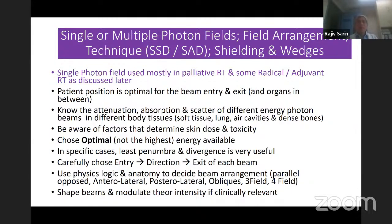Choose the optimal energy — the highest possible energy is not always the best. You may have 20 MV or 15 MV photons, but for a given case it may not be optimal. In specific cases, use the beam with the least penumbra and divergence — you should know which are the cases where it matters. And very importantly, carefully choose the entry direction and exit of each beam.